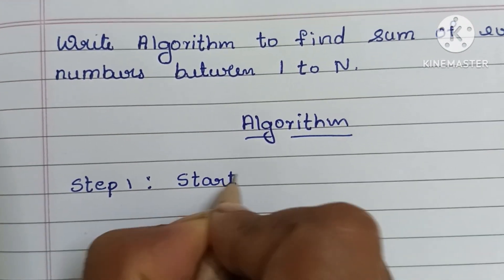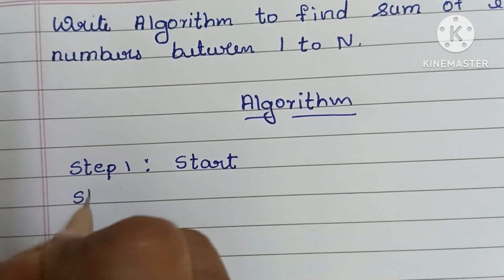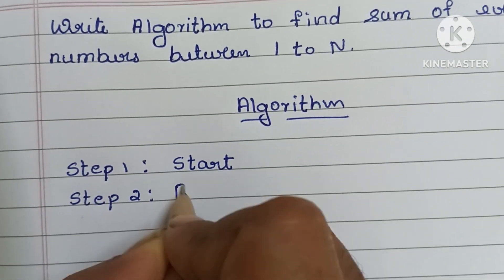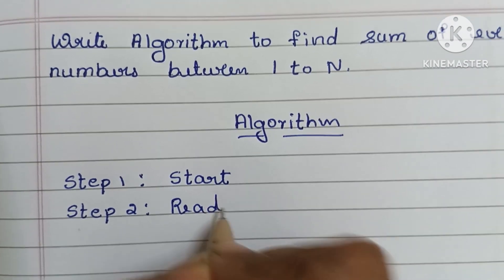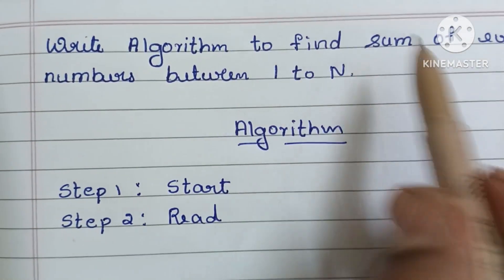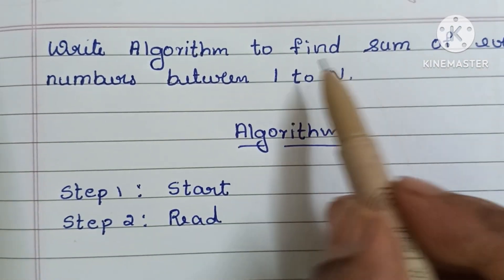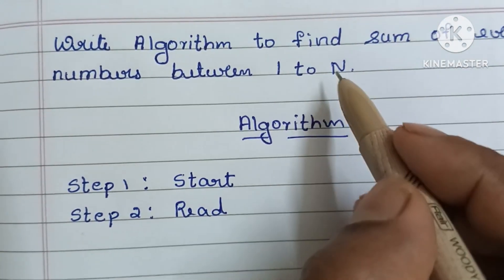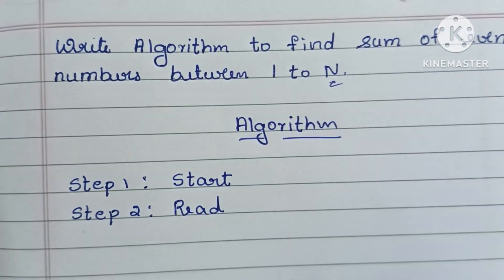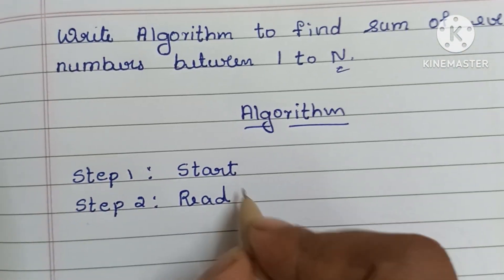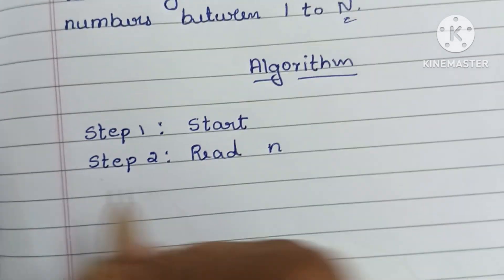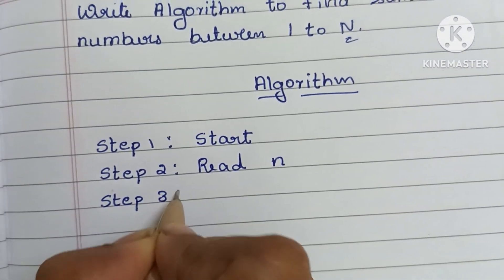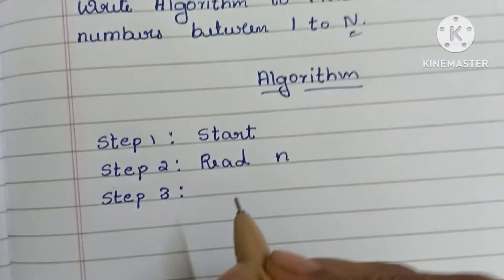In step 2, we have to read the input value. Here we have to find the sum of even numbers between 1 to N, so we have to read the value of N. Write: read N. In step 3, we have to declare the variables i and sum.